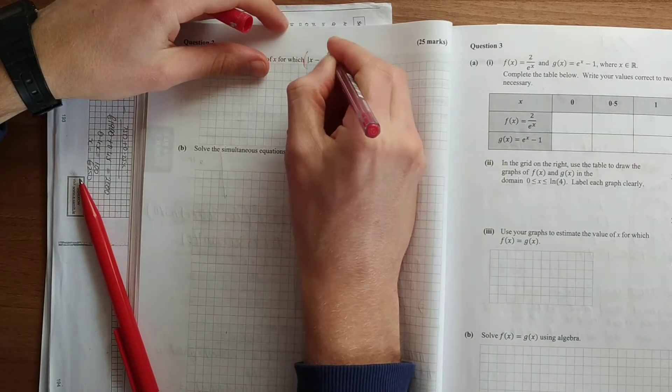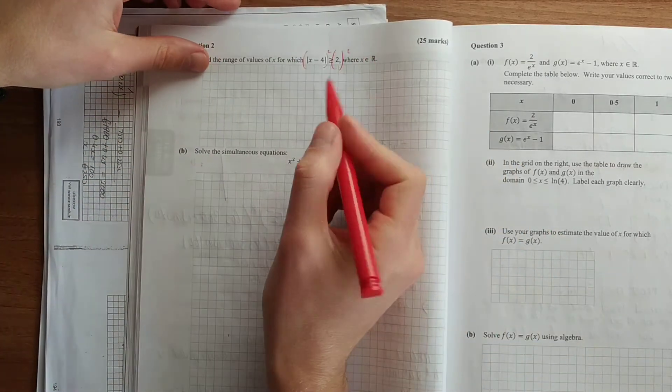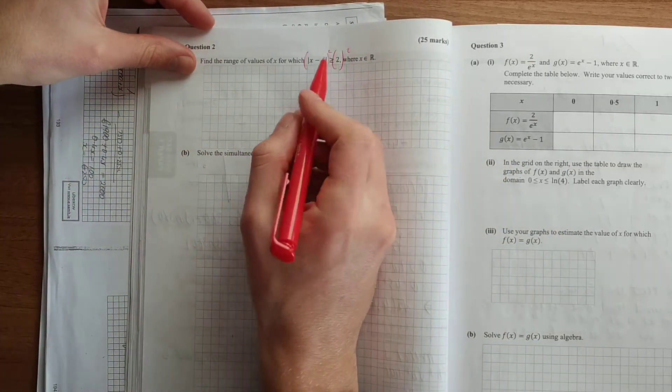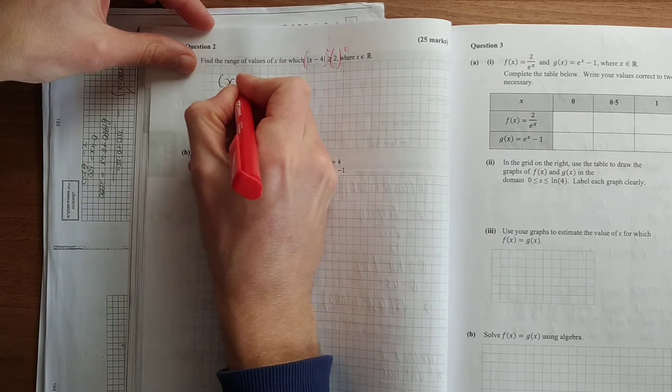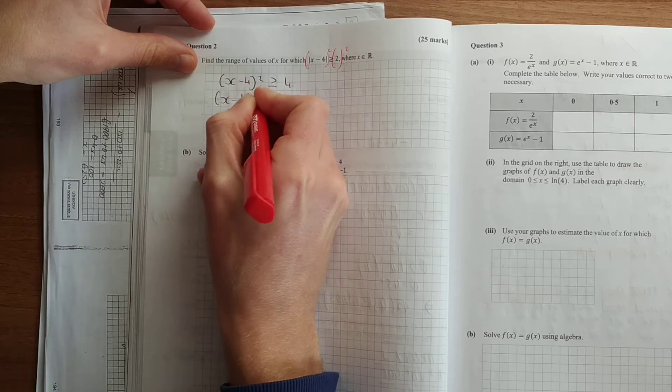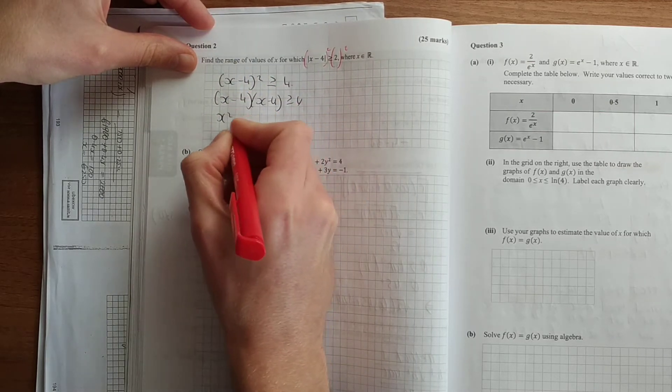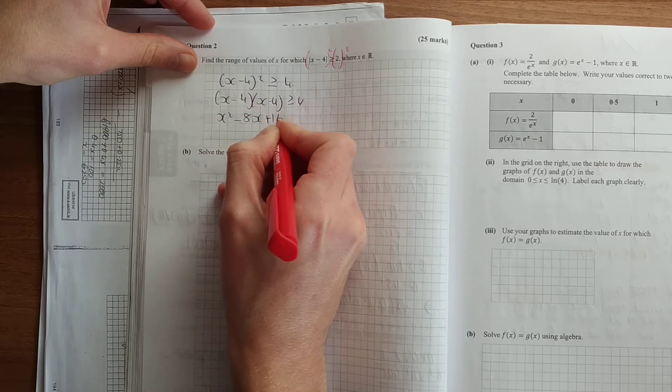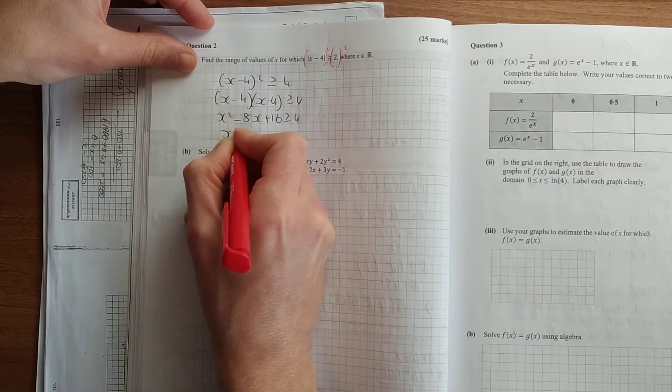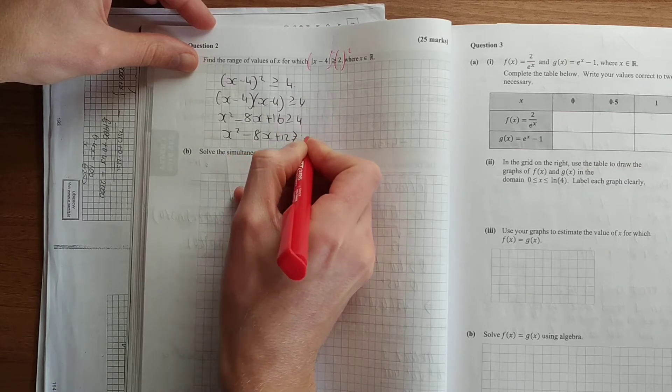This ensures that it's going to be positive, because the modulus always brings out the positive value. So square both sides, and you actually do square the side, bigger or equal to 4. x squared minus 4x minus 4x minus 8x plus 16, bigger or equal to 4. x squared minus 8x plus 12, bigger than or equal to 0.